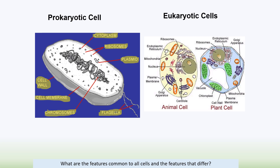Prokaryotic cells do not contain membrane-bound organelles. They do not contain endoplasmic reticulum, mitochondria, a nucleus, Golgi apparatus, or vacuoles — they only contain ribosomes among the typical organelles.